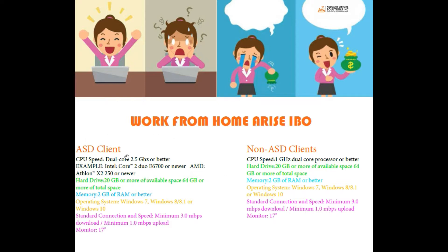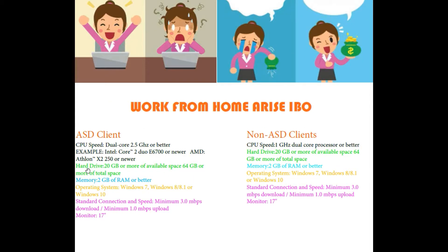Let's start with ASD clients. If you are working an ASD client — you can see that in the client PDF information once you click that blue eye above the select button in your Arise portal — then you need a CPU speed of 2.5 gigahertz or better. They even give you an example: Intel Core 2 Duo E6700 or newer. For hard drive, that's 20 gigs or more available space, 64 gigs or more of total space. For RAM, that's 2 gigs of RAM or better.